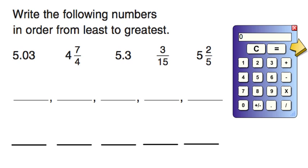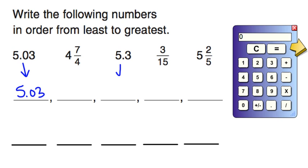Looking at a problem like this — you're going to see this on your math boxes in your journals — it says write the following numbers in order from least to greatest. It's hard to approach this problem because we see lots of different types of numbers: some decimals, a mixed number, and a fraction. So what we want to do is get all of these in the same form. The easiest way to do this is to turn everything into a decimal.